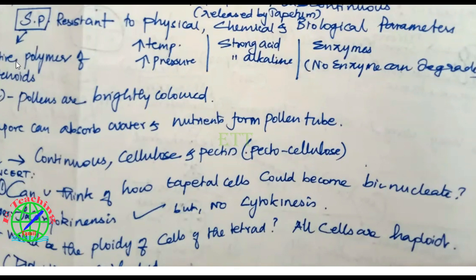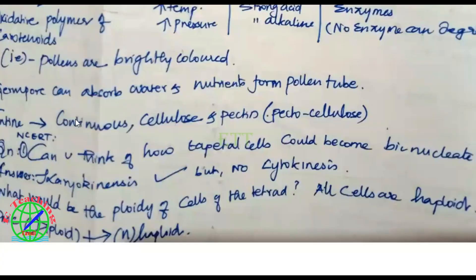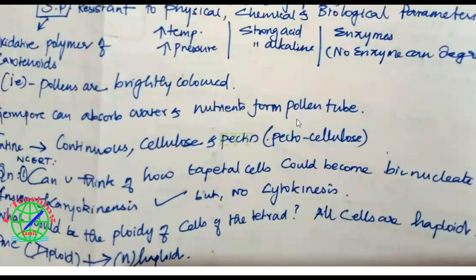Sporopollenin is a composition of oxidative polymers of carotenoids. Carotenoids are formed in sporopollenin, and pollens are also brightly colored. We have a variety of angiosperms and a variety of pollens. In our book, we have a very simple image of pollens showing how they are so varied in their shape and sizes, and also the ornamentation pattern. The germ pore can absorb water and nutrients to raise the pollen tube. Intine is a smooth layer, continuous and made up of cellulose and pectin — that's why we say it is pectocellulose.